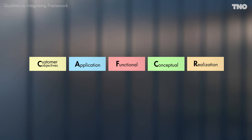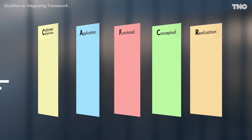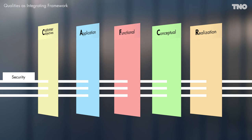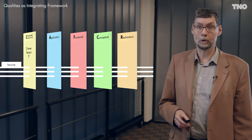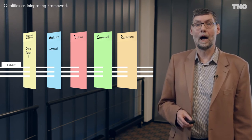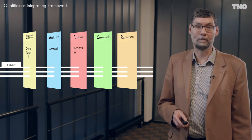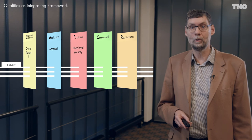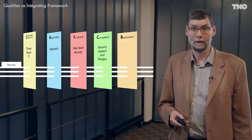We shouldn't only look at five different views independently, but need to see them in relation to each other. For example, in the Philips lighting example, security is a crucial concern for the building owner, tenants, and IT organization. So there are security objectives, a whole security approach at building level, and our lighting system should offer the security that helps achieve the desired user-level security by using all kinds of security designs within the lighting system.